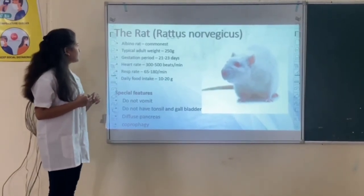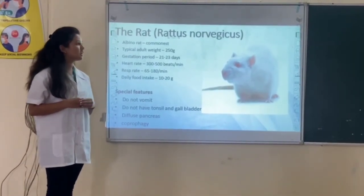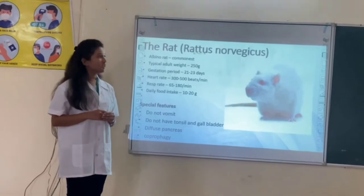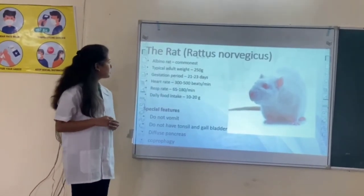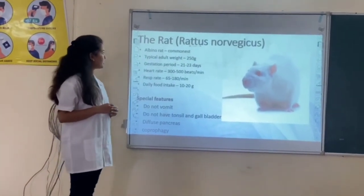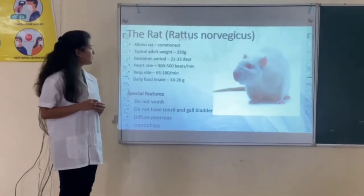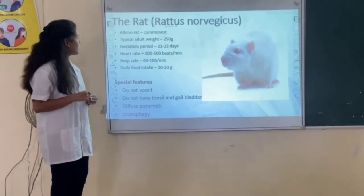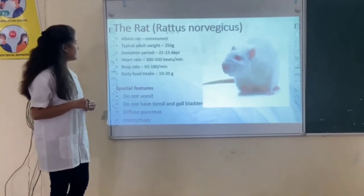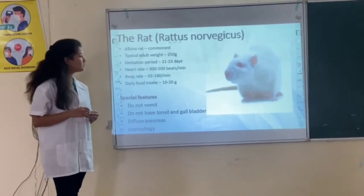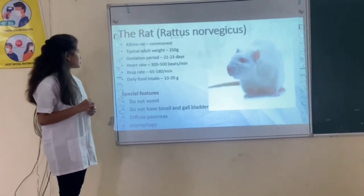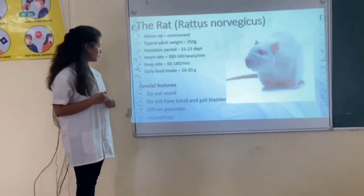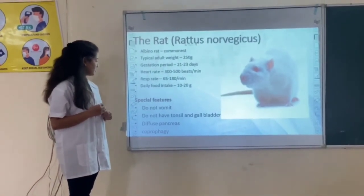The next laboratory animal is rat. The common species of rat used in the laboratory is the albino rat. The typical adult weight of rat is 250 grams. The gestation period is 20 to 23 days. Heart rate is 300 to 500 beats per minute. Respiration rate is 65 to 180 per minute. Daily food intake of rat is 10 to 20 grams. Special features of rat: it does not vomit, does not have a gallbladder, and has a reduced pancreas.